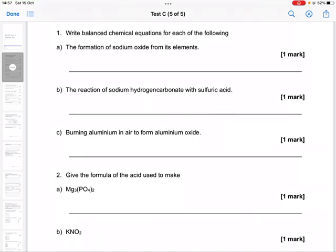Right, balance chemical equations for each of the following. So A, the formation of sodium oxide from its elements.